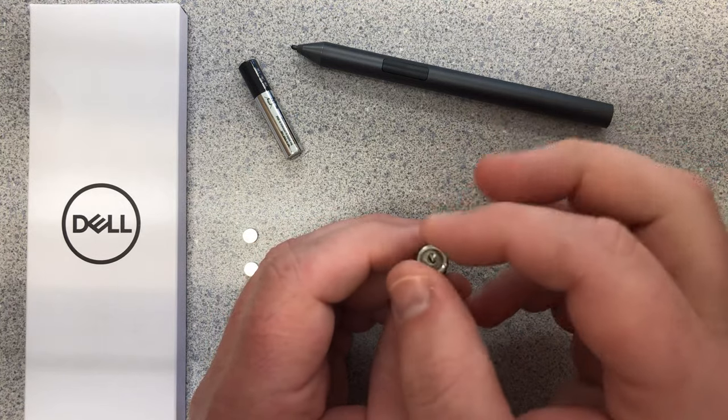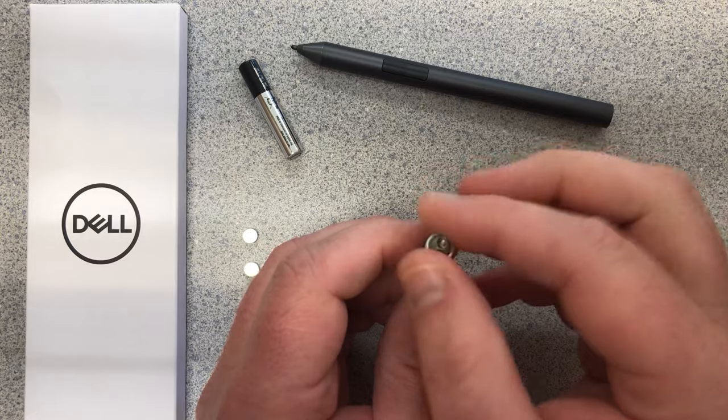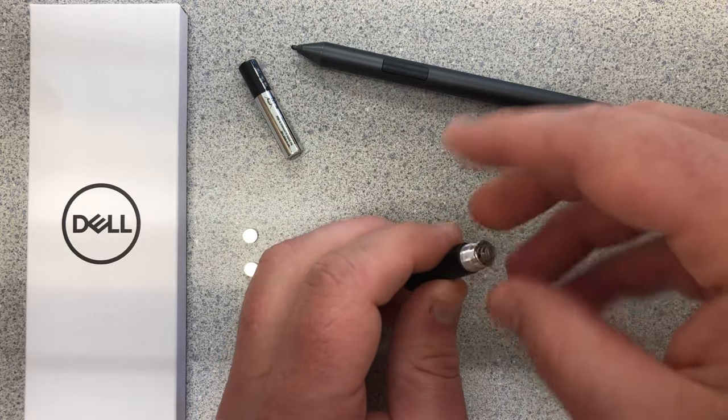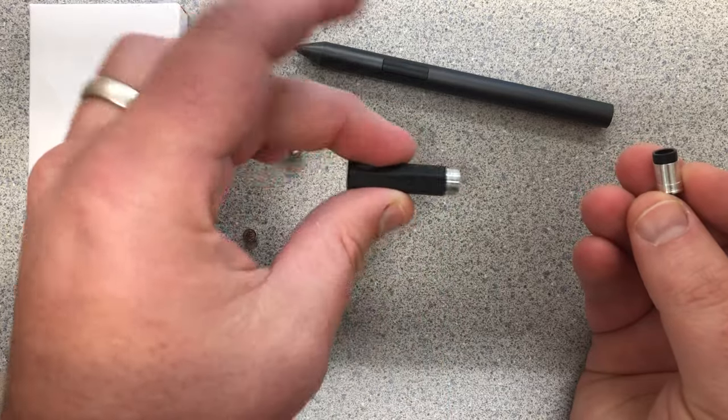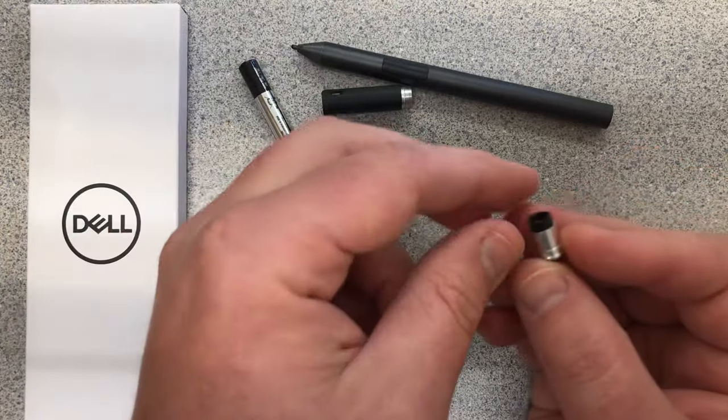So now I'm going to untwist that the rest of the way and a tiny little part just like this is going to come out of the top barrel. So now I'm going to set the top barrel aside.